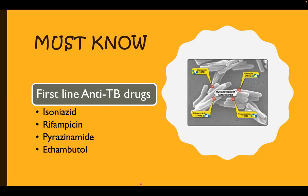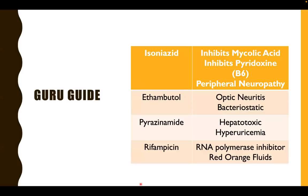You must know the first-line anti-TB drugs: isoniazid, rifampicin, pyrazinamide, and ethambutol. Isoniazid inhibits mycolic acid. It also inhibits the absorption of pyridoxine or vitamin B6; hence one of the adverse effects is peripheral neuropathy. This is the rationale why vitamin B complex is given in patients taking anti-TB medications.